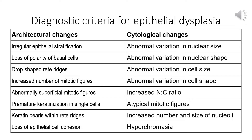Cytological changes include: abnormal variation in nuclear size or nuclear pleomorphism, abnormal variation in nuclear shape, abnormal variation in cell size and cell shape, increased nucleocytoplasmic ratio, atypical mitotic figures, increased number and size of nucleoli, and hyperchromasia of the nucleus. Pathologists look for all these architectural and cytological changes to reach a diagnosis of dysplasia.